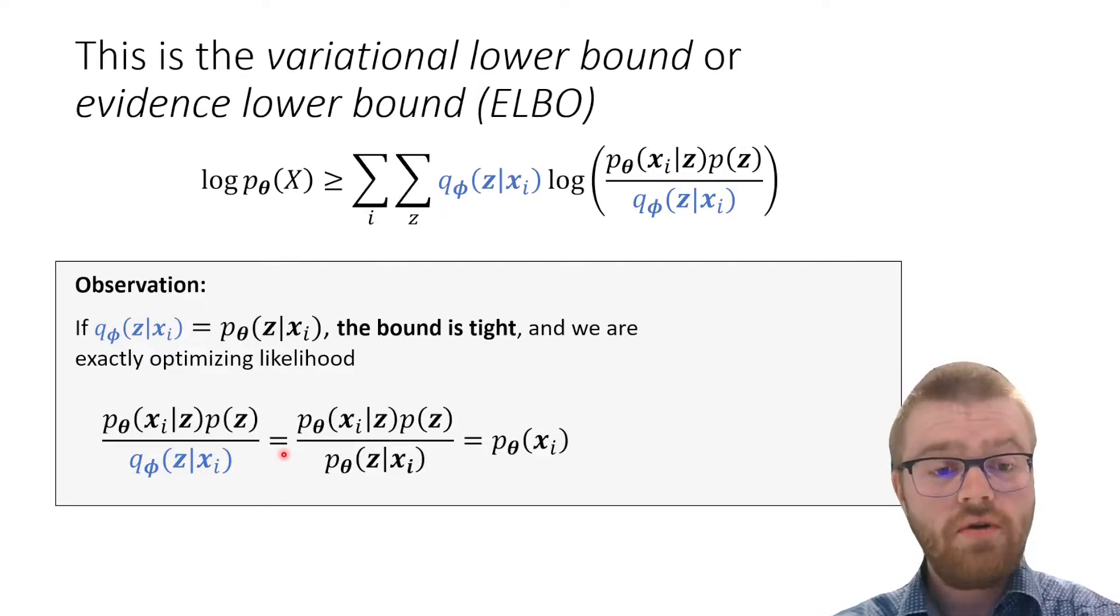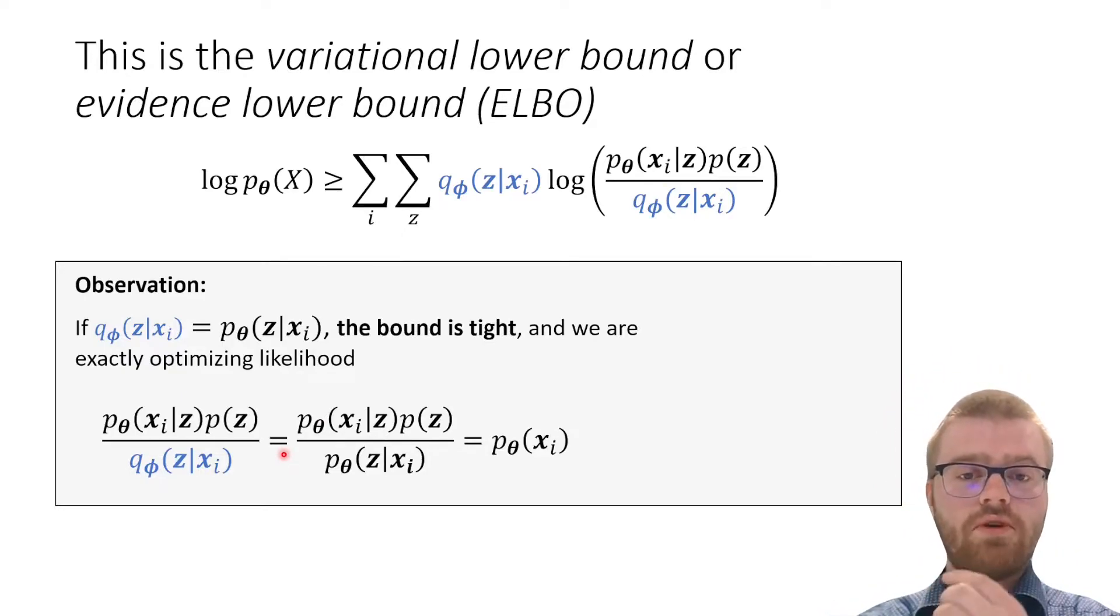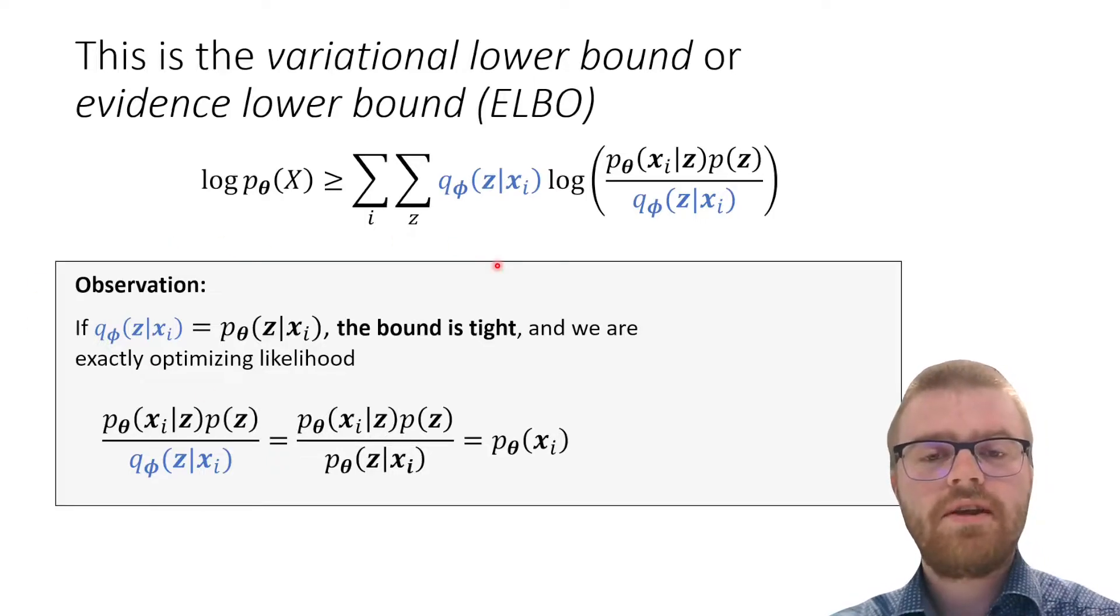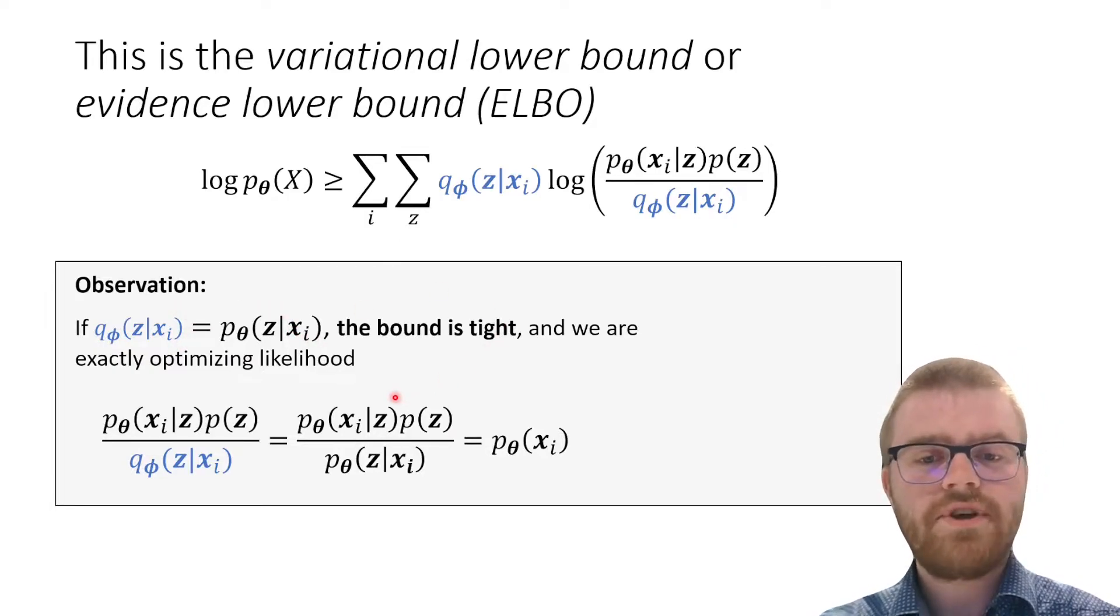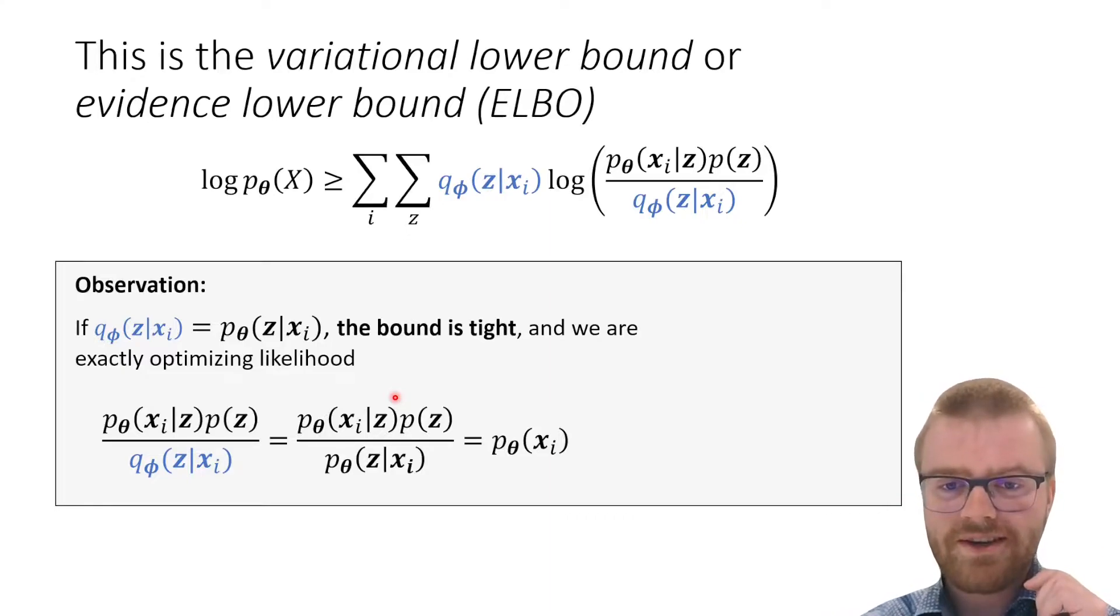This is often called the evidence lower bound or ELBO loss. What we can immediately observe is if our encoder is actually perfect, then the bound is tight and we are exactly optimizing likelihood.